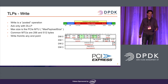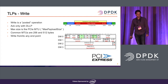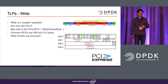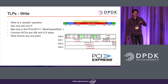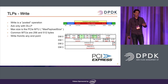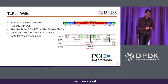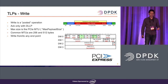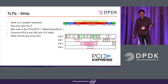The first TLP operation is write — a posted, fire-and-forget operation. You write to an address without waiting for completion; completion is handled at the DLLP layer. PCIe has an MTU called max payload size — commonly 256 or 512 bytes. Writes can go from PCIe to memory, PCIe to PCIe, or CPU to PCIe. Any endpoint can post a write transaction by specifying the address and length in the header.